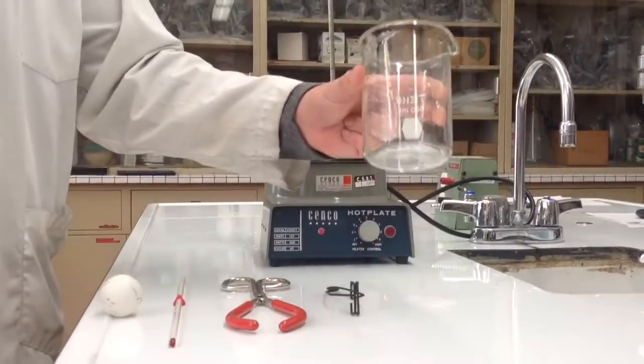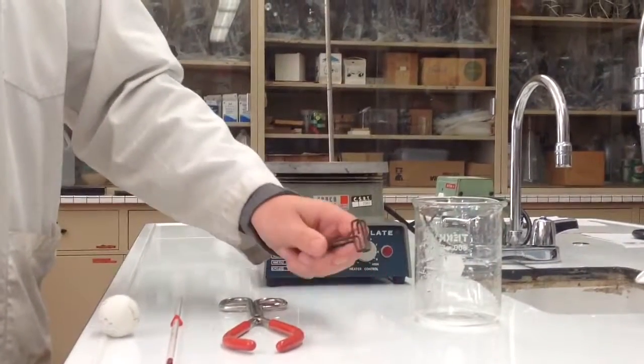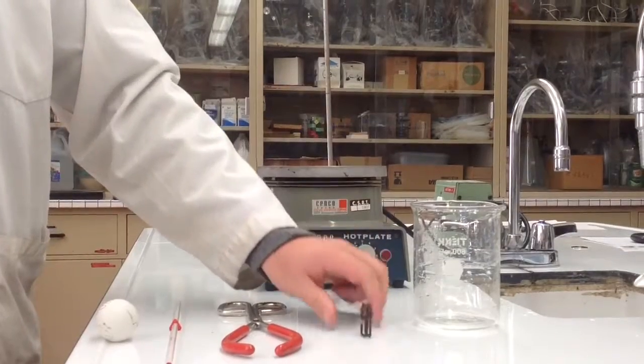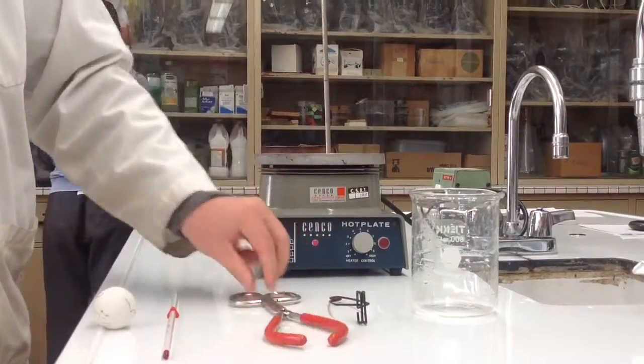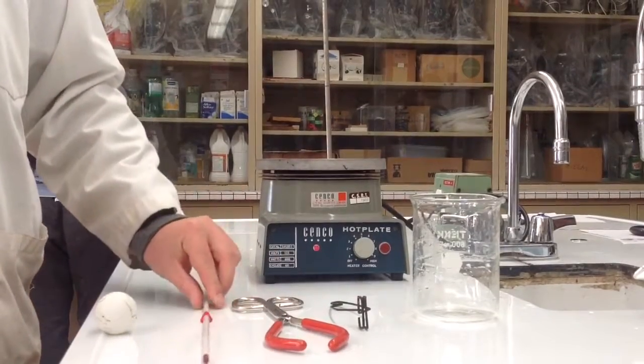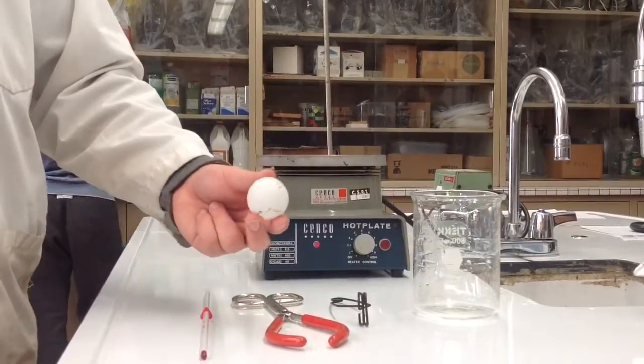What you need for this experiment is a 500 milliliter beaker, a test tube holder, a pair of tongs, a thermometer to measure the temperature, a hot plate, and last but not least, your ping-pong ball.